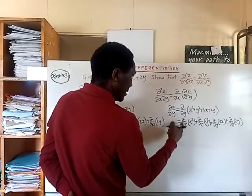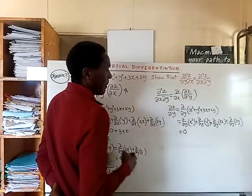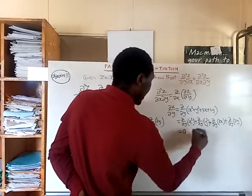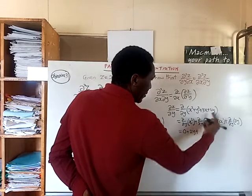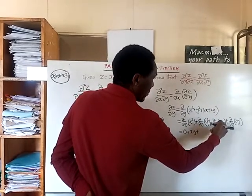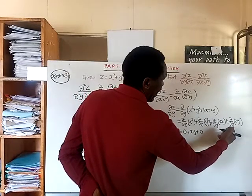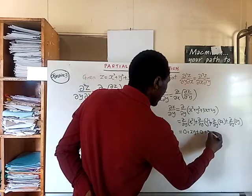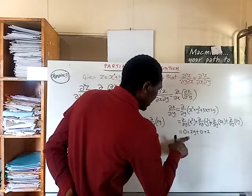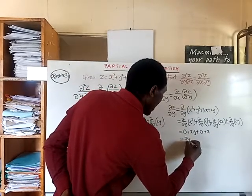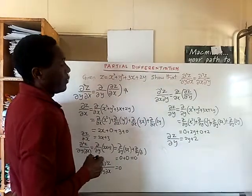Because we are differentiating partially with respect to y, x is a constant. So the first term gives us 0. The second term, y², differentiated with respect to y in the normal way, gives 2y. The third term, 3x, has no y, so it gives 0. The last term, 2y, differentiated with respect to y, gives 2. Simplifying: 0 + 2y + 0 + 2 = 2y + 2. That is the partial derivative of z with respect to y.